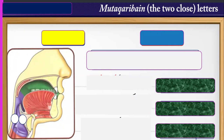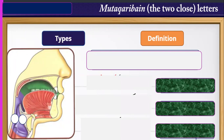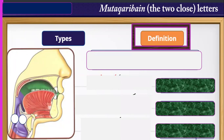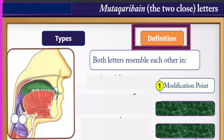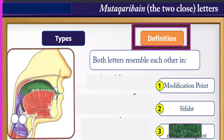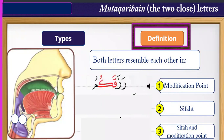The first point is the definition of المتقاربين. We will study the definition and types. Starting with the definition: متقاربين means both letters resemble each other in their modification point (makhraj) and their sifa. For example, قاف and كاف.